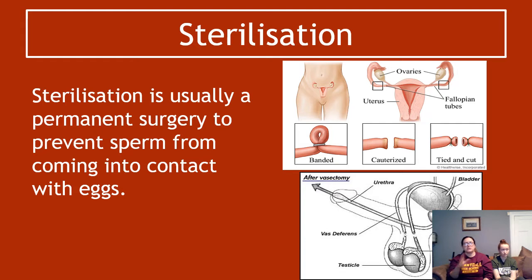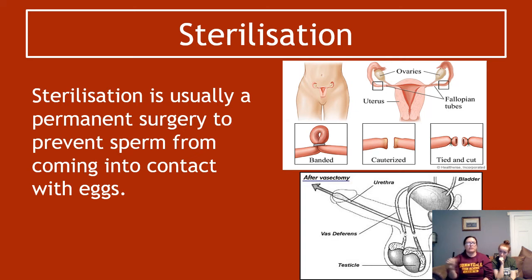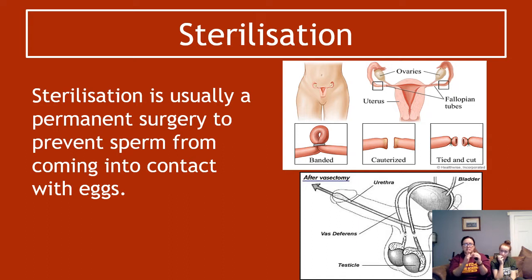Sterilisation is a permanent surgery to prevent sperm coming into contact with eggs or ova. In females, the oviducts can be banded — a very tight band is put around them to prevent the ova from travelling down. They can also be cauterised, which involves cutting and burning the ends to seal them off, or tied and cut. This prevents ova travelling down the oviduct into the uterus, and also prevents sperm travelling up to meet the ova.